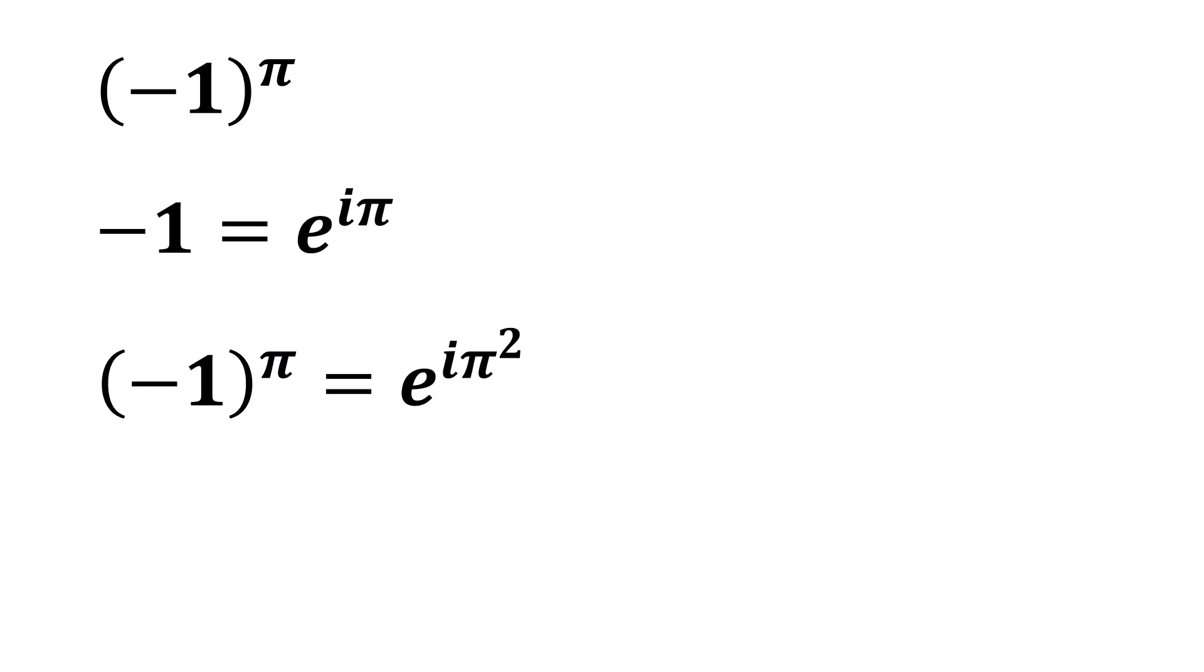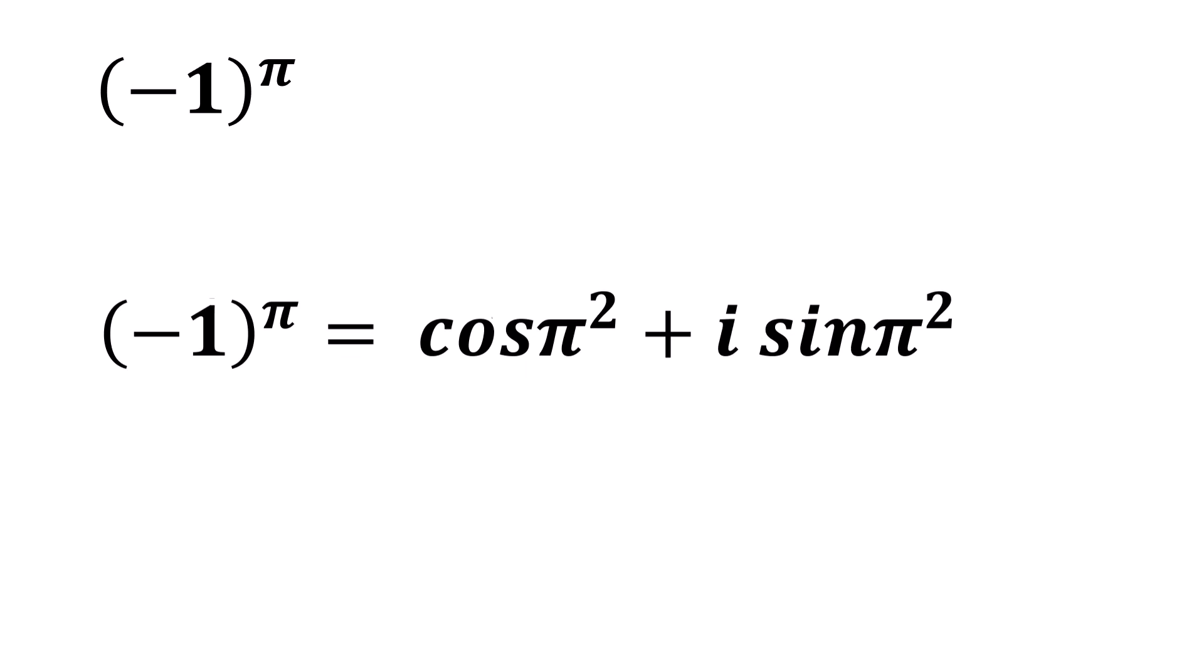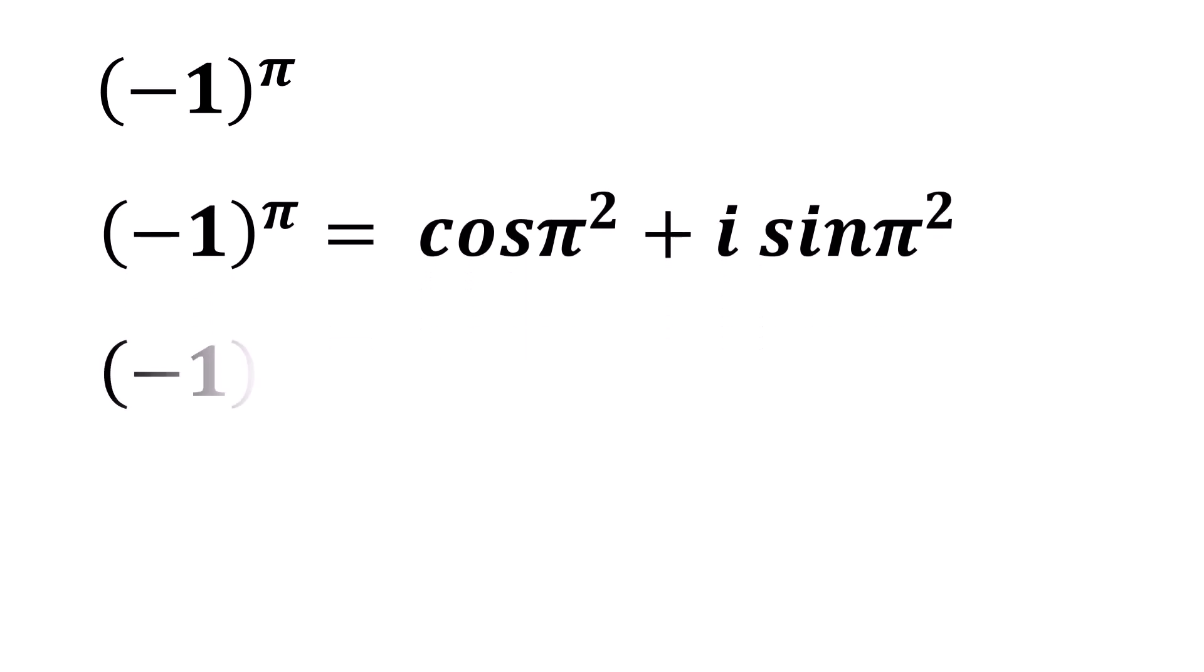Now we again use the formula for e to the power of i theta, and we substitute in theta equals pi squared. So we get this is equal to cosine of pi squared plus i times the sine of pi squared. The approximate value of negative 1 to the power of pi is equal to negative 0.903 minus 0.430i. And that's our solution.